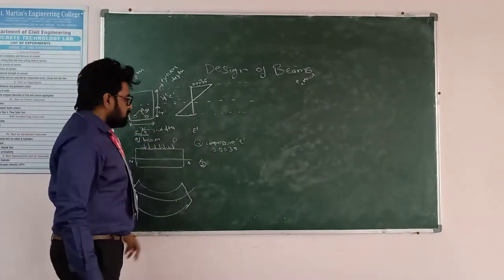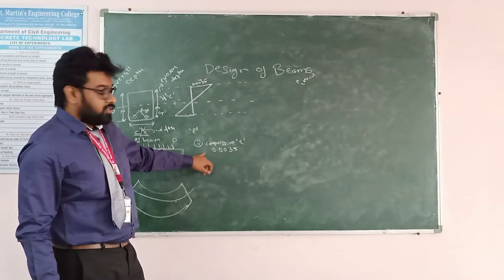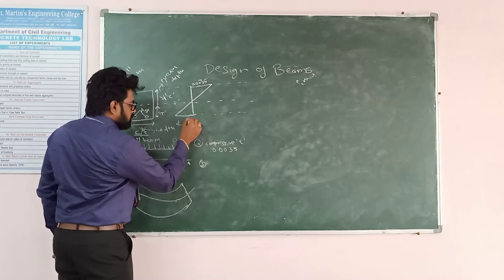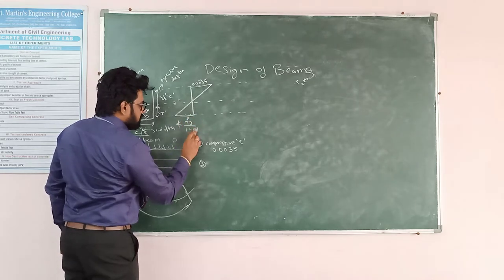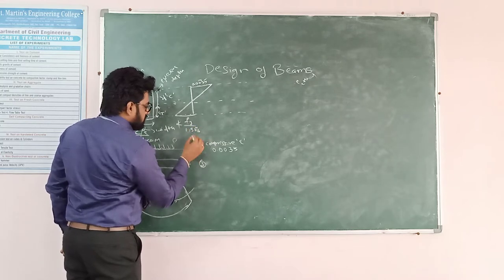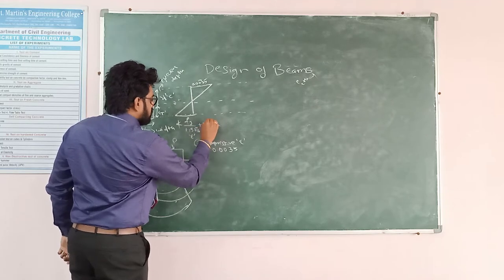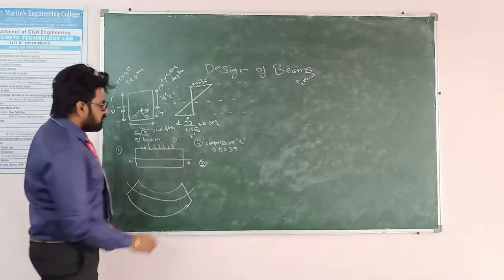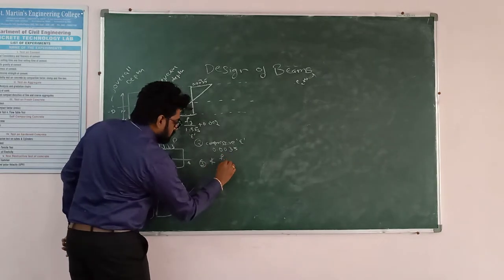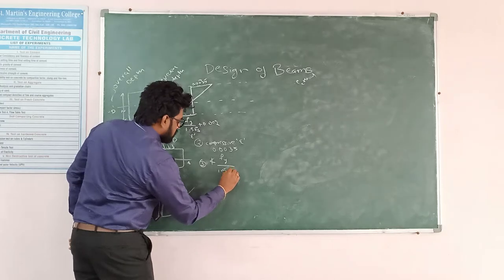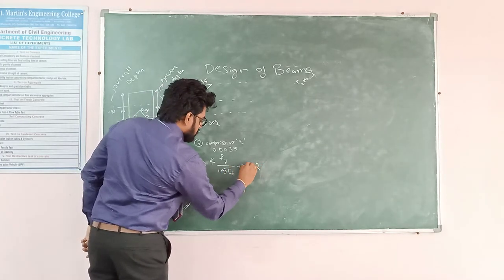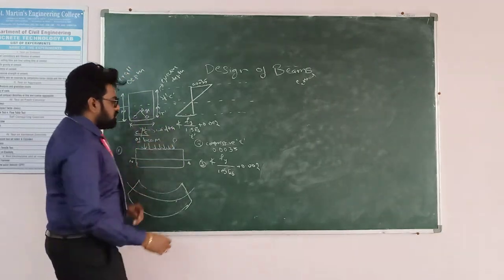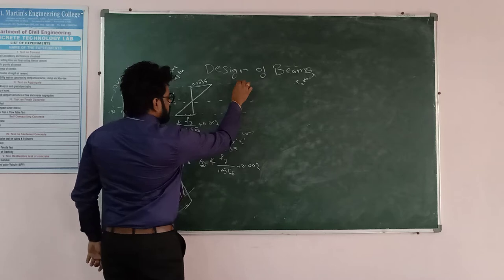The next assumption: the tensile strain in steel should not be less than fy divided by 1.15 plus 0.002. This covers the compression side and the tensile side of the strain.